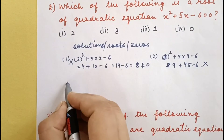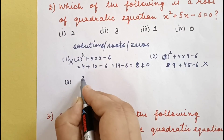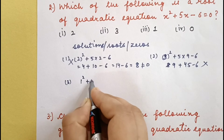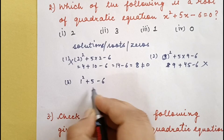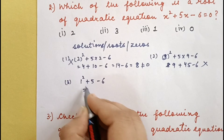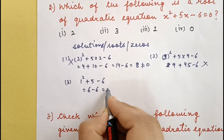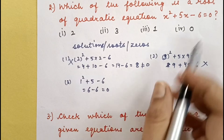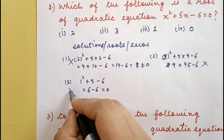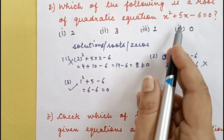Now put x = 1: 1² + 5×1 − 6 = 1 + 5 − 6 = 0. The left-hand side becomes 0, and the right-hand side is also 0 — so it satisfies the equation.